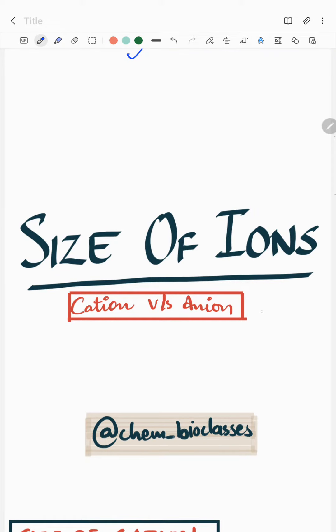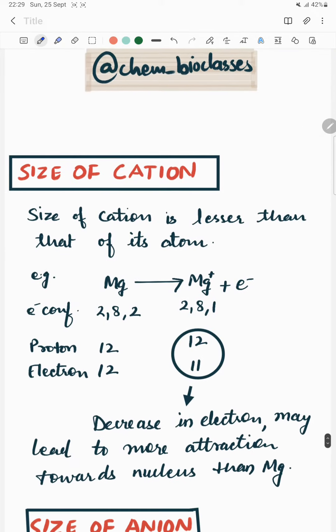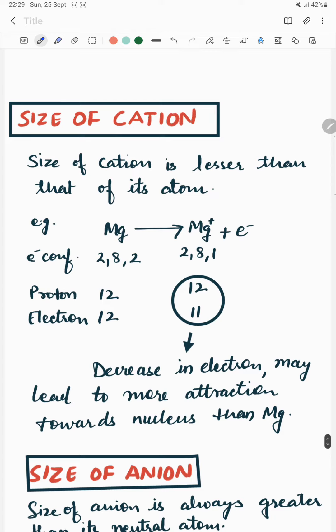Let's compare size of cation and anion. Size of cation is lesser than that of its atom. Let's take an example of magnesium. If we lose one electron from magnesium, then we get Mg positive.